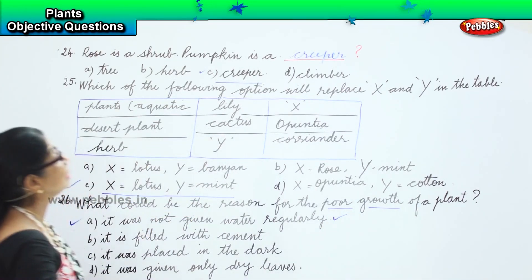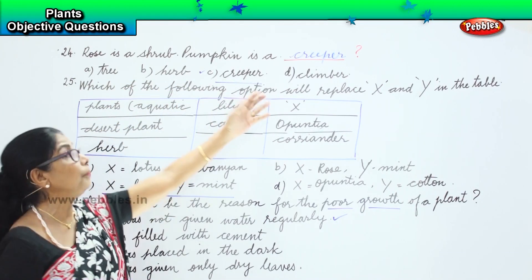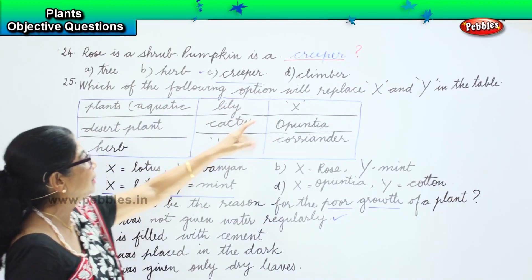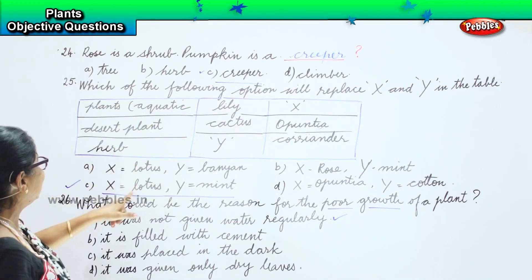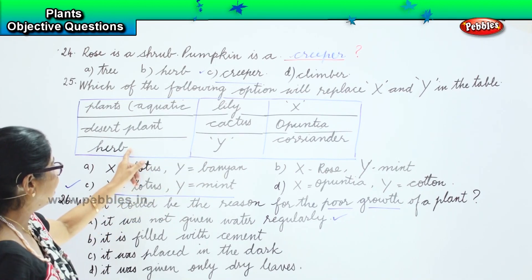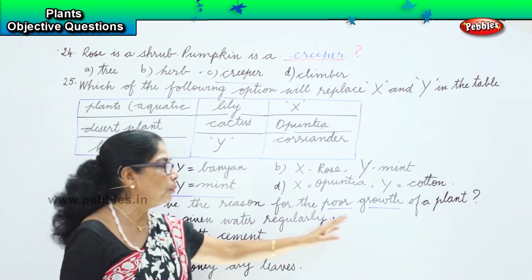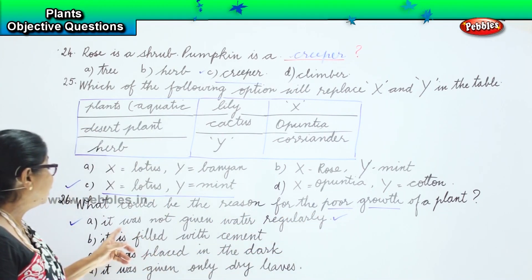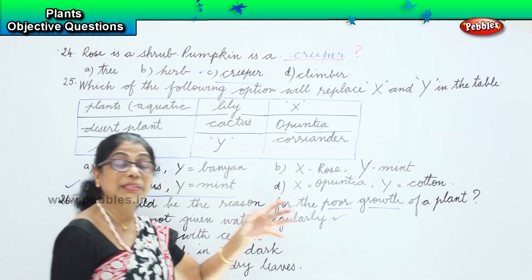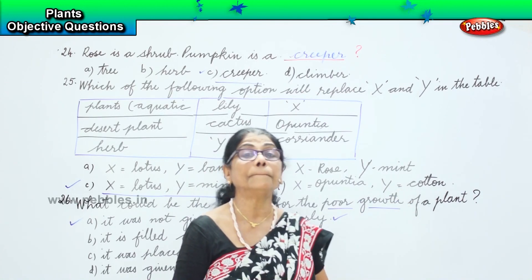Now let's look at the three questions and answers. Rose is a shrub — pumpkin is a creeper. Which of the following option will replace X? X is aquatic, so we have lotus. Y is mint — mint is a herb, that's the right one. What could be the reason for the poor growth of a plant? It was not given water regularly. The water needs to be supplied regularly for the proper growth of the plant.